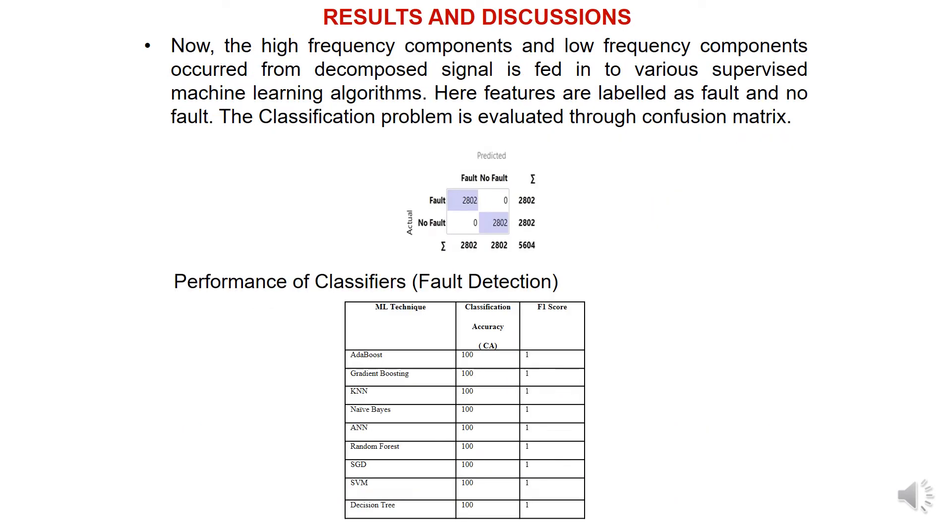These high-frequency and low-frequency components which occur from decomposing the voltage signal are fed to the supervised machine learning algorithms. You can see the confusion matrix here. We took around 5,604 samples, and out of them 2,802 samples are fault signals and 2,802 are non-fault signals. We classified using different types of supervised machine learning classifiers and we got 100% accuracy here.